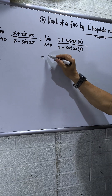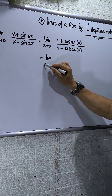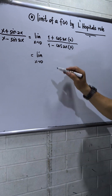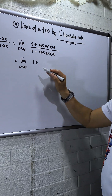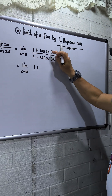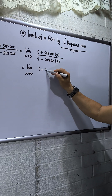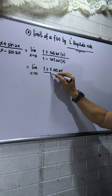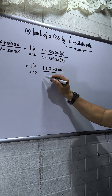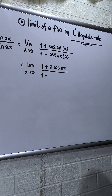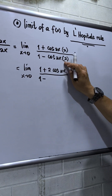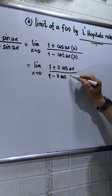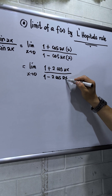So applying L'Hôpital's rule with x approaching 0, this becomes 1 plus 2 cosine 2x in the numerator, and 1 minus 2 cosine 2x in the denominator.